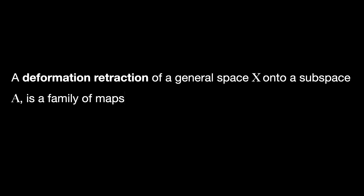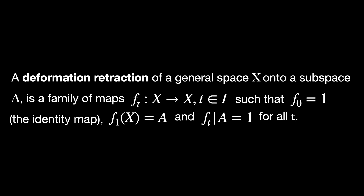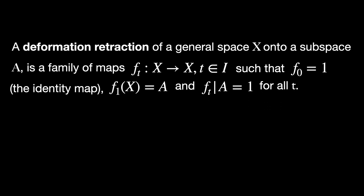This example leads us to a general definition. A deformation retraction of a general space X onto a subspace A is a family of maps f_t from X to itself, with t belonging to the interval [0,1], such that f_0 is the identity map, f_1 of X — the image of the function — is the subspace A, and f_t restricted to the subspace A is also the identity map for all times t.